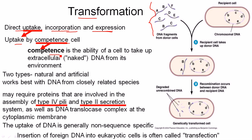Competence is the ability of a cell to take up extracellular DNA from its environment. Those types of cells that actually accept outside DNA are called competent cells. There are two types of transformation: the natural one and the artificial one. Natural transformation happens in the natural environment.